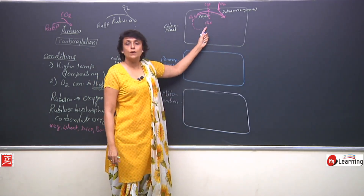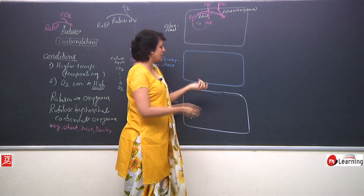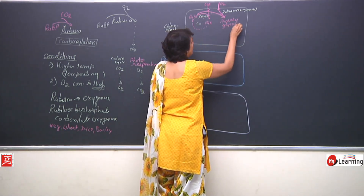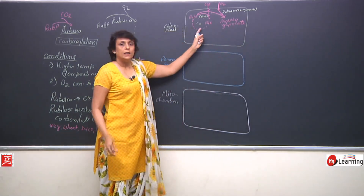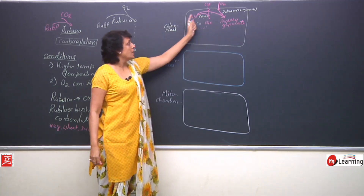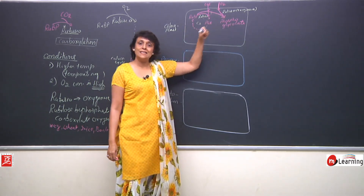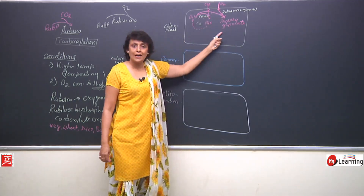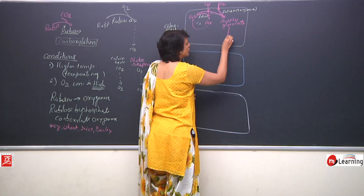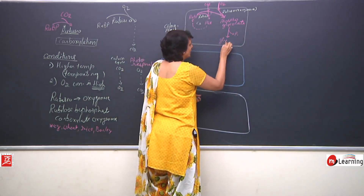In the normal C3 cycle, phosphoglyceric acid is synthesized. But when conditions have high temperature and high oxygen concentration, Rubisco acts as an oxygenase and helps in the addition of oxygen to RuBP. The compound which is formed is phosphoglycolate. This phosphoglycolate loses the phosphate and changes into glycolate.